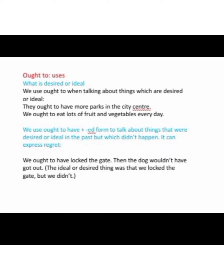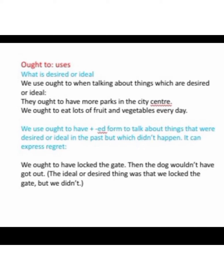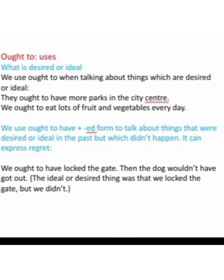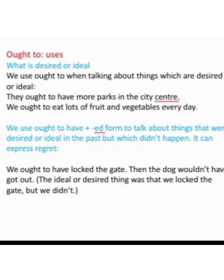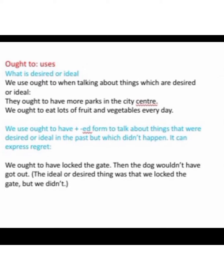Last comes the uses of ought to. Ought to is used when we are talking about things which are desired or ideal — like 'They ought to have more parks in the city center' or 'We ought to eat lots of fruits and vegetables every day.' We use 'ought to have' plus the ed form of the verb to talk about things that were desired or ideal in the past but didn't happen. It can express regret — like 'We ought to have locked the gate.' So ought to expresses things which were desired or ideal in the past but that thing didn't happen.